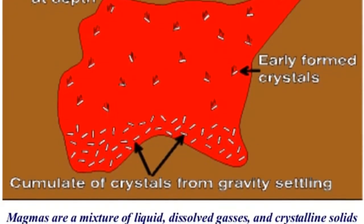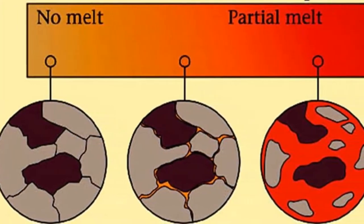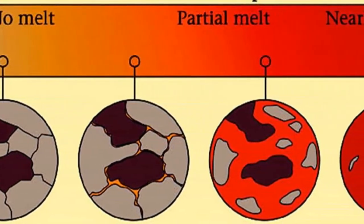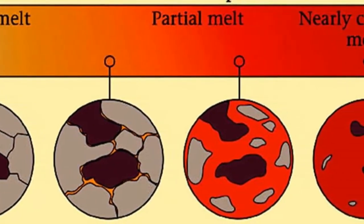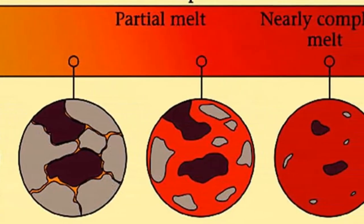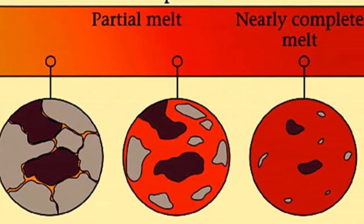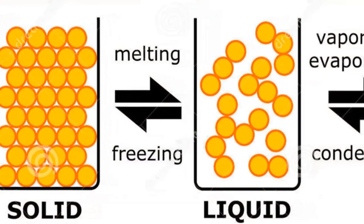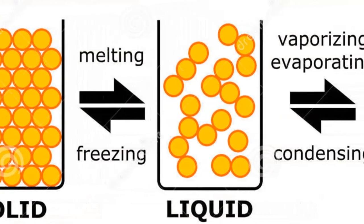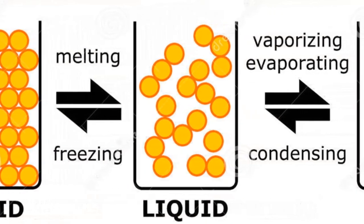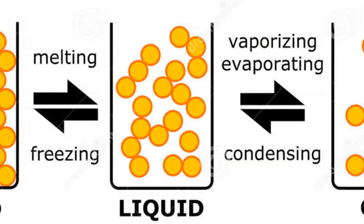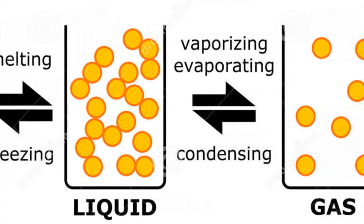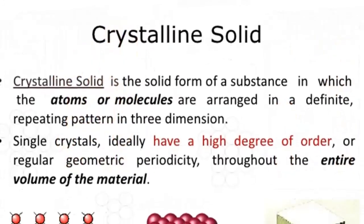The gaseous components of magma, called volatiles, are materials that will vaporize or form a gas at surface pressures. The most common volatiles found in magma are water vapor (H2O), carbon dioxide (CO2), and sulfur dioxide (SO2), which are confined by the immense pressure exerted by the overlying rocks.